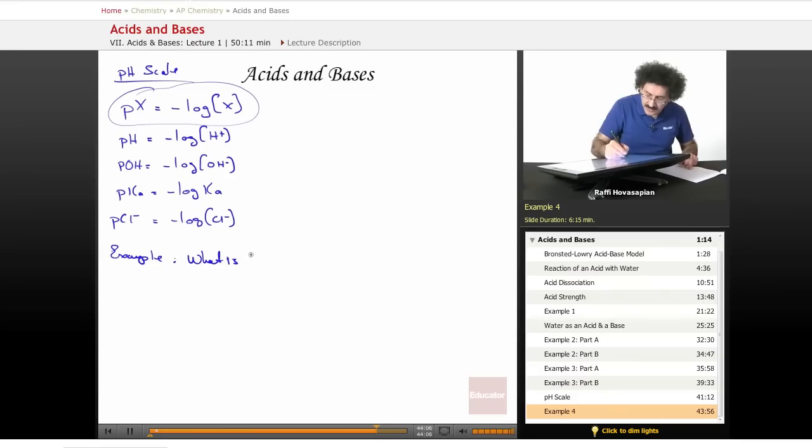What is the pH and pOH of a solution which is 1.4 times 10 to the negative 3 molar hydroxide?